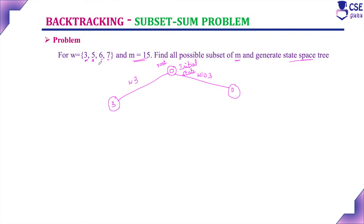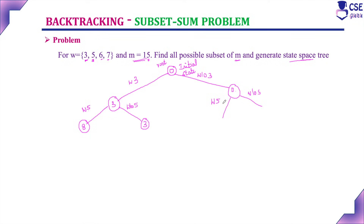Next, consider the second element 5. For both nodes at the first level, we consider with element 5 and without element 5. With 5 added to 3: 5 + 3 = 8. Without 5: value stays 3. For the right branch (value 0): with 5 gives 0 + 5 = 5, and without 5 the value stays 0.